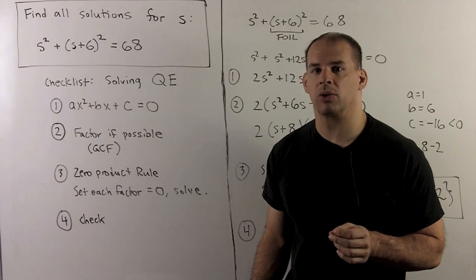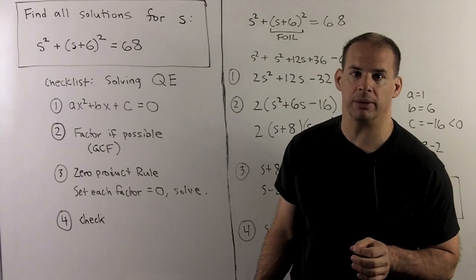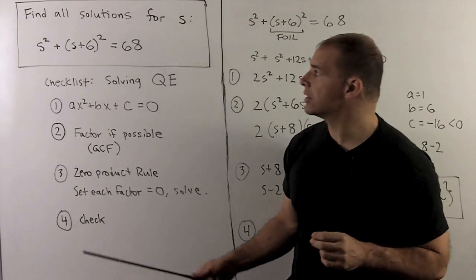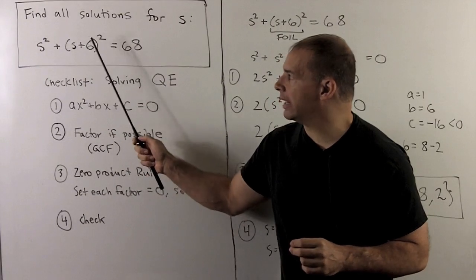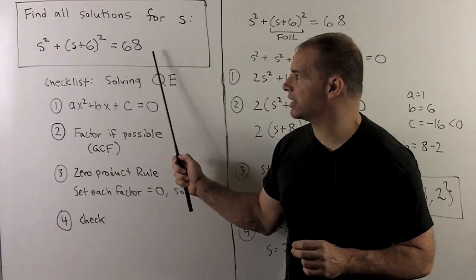Here's another example of using the zero product rule to solve a quadratic equation. The problem is, we're going to find all solutions for S in the equation S squared plus quantity S plus 6 squared equal to 68.